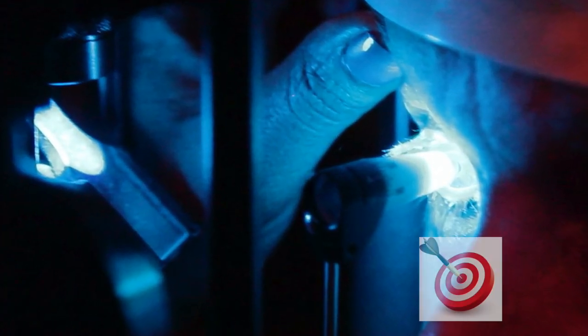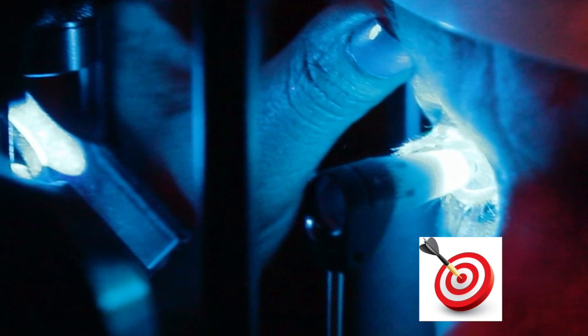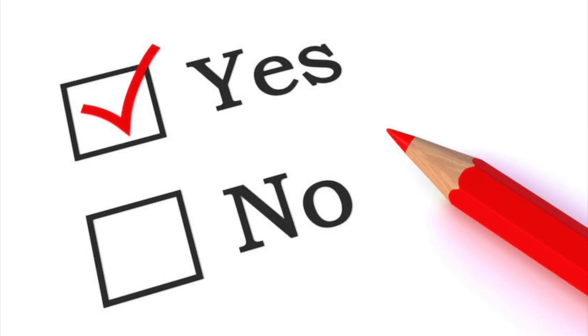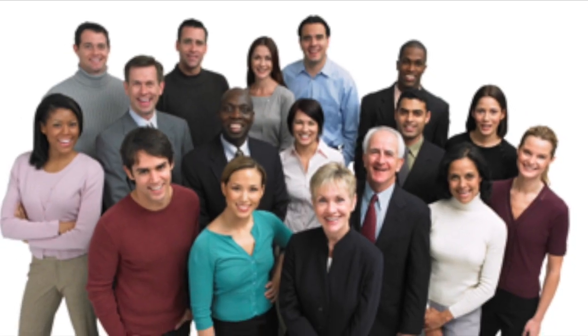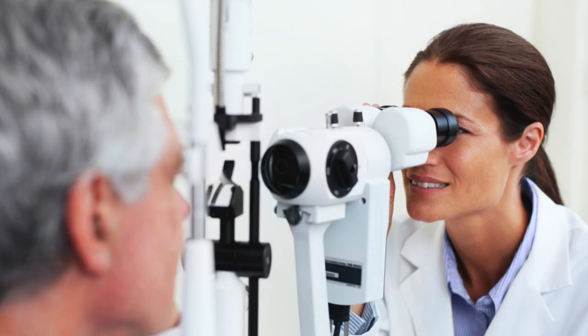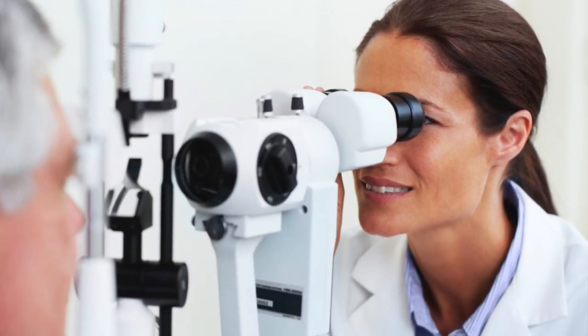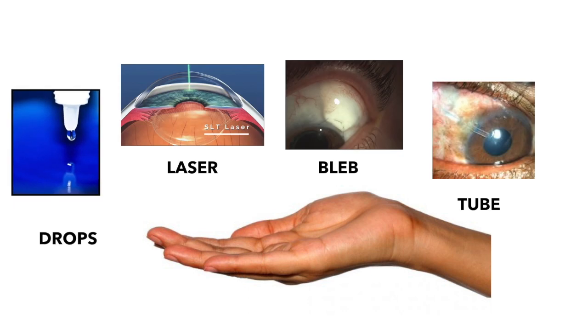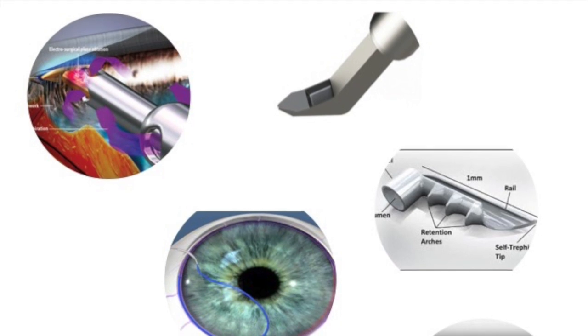So first up, are target pressures really needed for every glaucoma patient? I believe that a target eye pressure should be set for all patients, in addition to monitoring the structure and function of the optic nerve and managing the quality of life for the patient. Setting a target IOP guides the clinician on how much pressure lowering is needed and how intense the treatment regimen should be in order to achieve this goal — whether to pursue an eyedrop, consider a laser or surgical approach, or a combination of these.